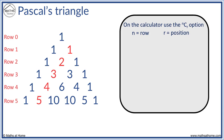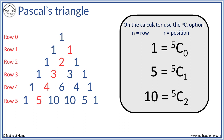We start counting the positions from 0. So for example, row 5 position 0 can be found with 5C0. Pressing 5C0 on the calculator gives us 1. Row 5 position 1 is 5C1, which equals 5. Row 5 position 2 gives us 10 when we type 5C2. We can also see that the triangle is symmetrical — we have 1, 5, 10, then 10, 5, 1.